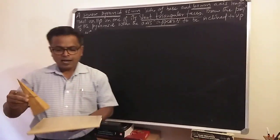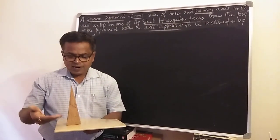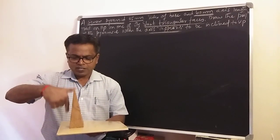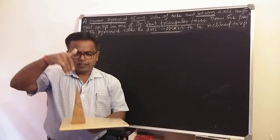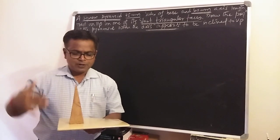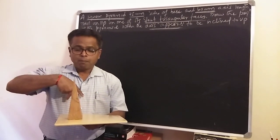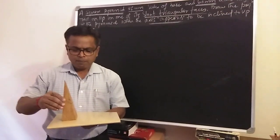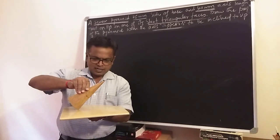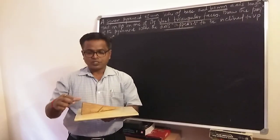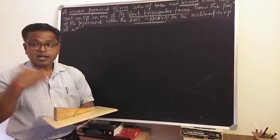How can we keep a pyramid in different positions? If HP is here and VP is here, a square pyramid resting on HP on its base has the axis perpendicular to HP and parallel to VP. All base edges of the square pyramid are parallel to HP, with two edges parallel to VP and two perpendicular to VP. The pyramid can also rest on one of its edges, one of its corners, one of its slant faces, or one of its slant edges.